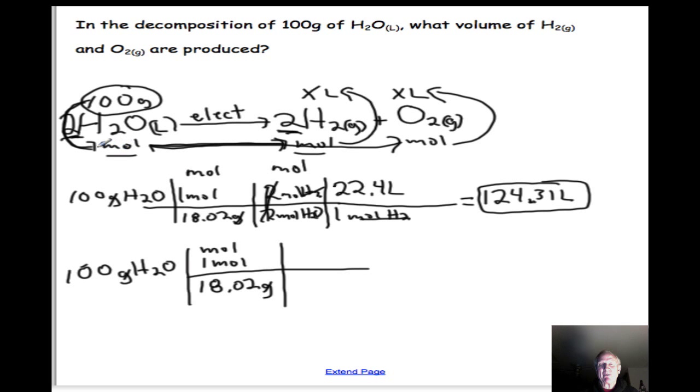Now our ratio to get from moles of H2O to O2 is that there is one O2 produced for each two H2Os that decompose. So our ratio is one mole O2 divided by two moles H2O. That takes us to the mole of O2 part of the problem.